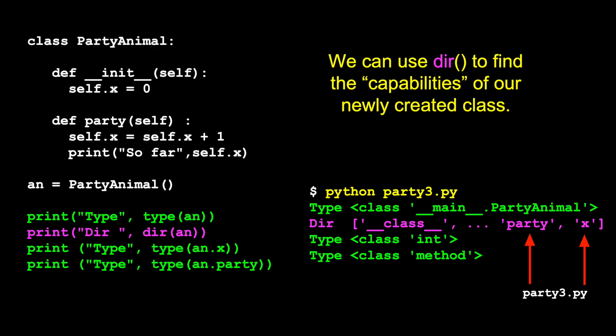And again, these are the things that you can say an.x. Or an.party. Because this dot is the object operator. The object lookup operator that says lookup in the object an the thing x. Or lookup in the object an the thing party. Okay?